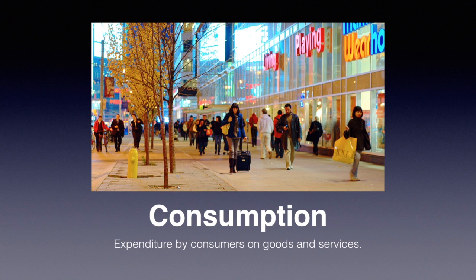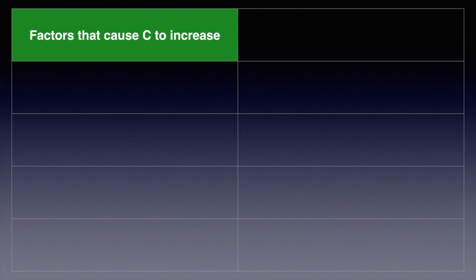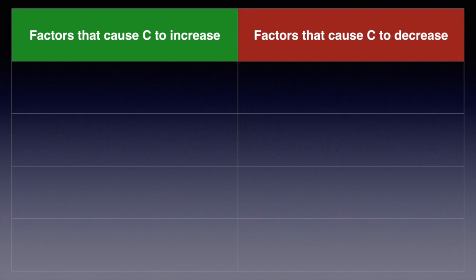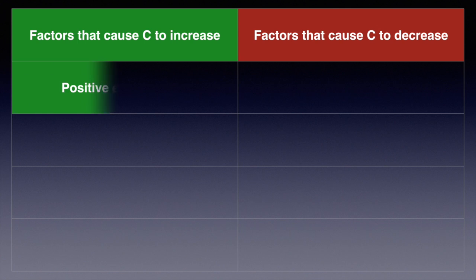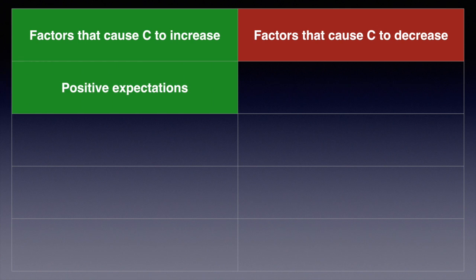We will examine the factors that would cause consumption to rise and fall — the factors that influence consumer spending throughout an economy. When consumers have positive expectations and high confidence about the future, they are more likely to spend in the present. They may believe their job is secure, opportunity is available, and businesses are performing well. Their friends may be finding work relatively easily and many indicators point to continued prosperity.